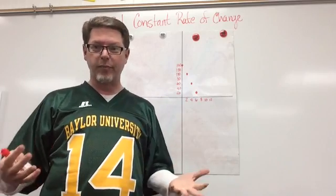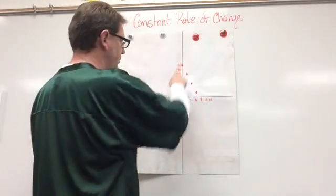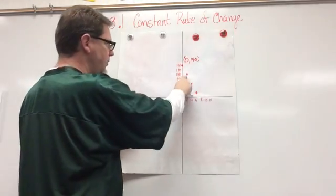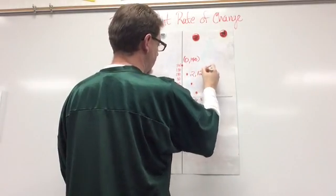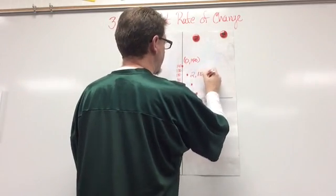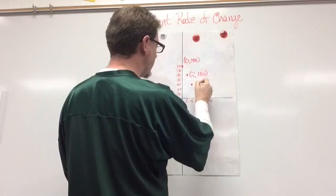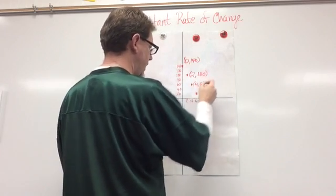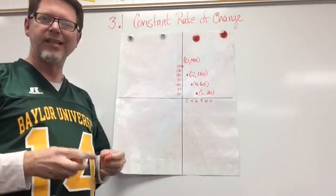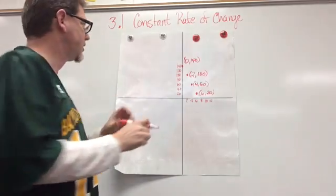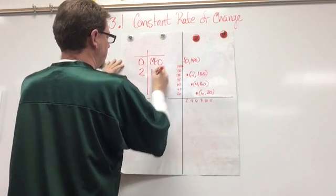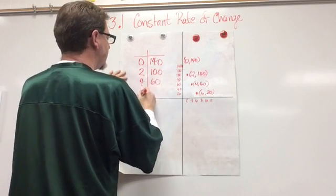So the first thing we need to do is pick out some points on our graph. So I'm going to start with this top point up here. And this top point is 0, 140. And this next point is 2, 100. And this next point is 4, 60. And the last point is 6, 20. So now let's write those points in a table. We can create a table. So I have 0, 140. 2, 100. 4, 60. And 6, 20.